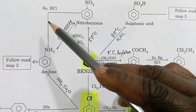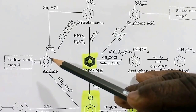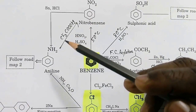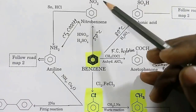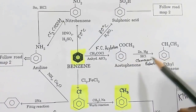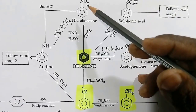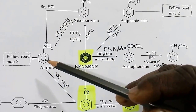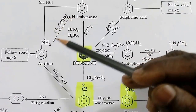Nitrobenzene can be reduced by Sn in presence of HCl and you get aniline. Reversely, if you are asked to convert aniline to nitrobenzene, CF3COOH (trifluoroacetic acid peroxide) will oxidize aniline to nitrobenzene. So: benzene to acetophenone and ethylbenzene via Friedel-Crafts acylation and Clemmensen reduction; sulfonation; nitration to nitrobenzene; reduction to aniline; and oxidation back to nitrobenzene.